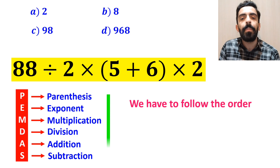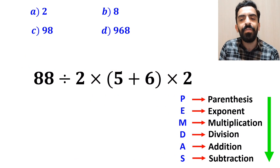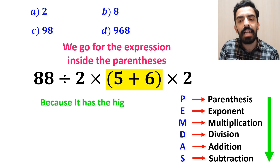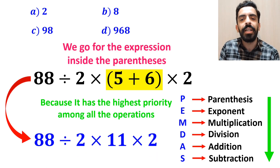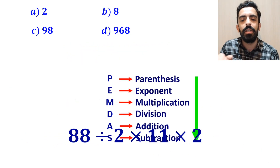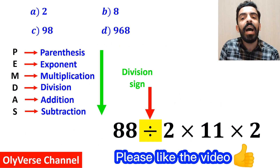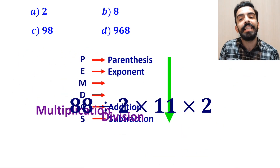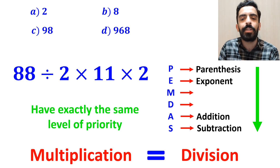We have to follow the order of operations step by step from top to bottom. The first step is to go for the expression inside parenthesis, because it has the highest priority among all operations. So instead of this expression, we can write 88 divided by 2 times 11 and multiplied by 2. As you can see in the image, this expression has one division sign followed by two multiplication signs.